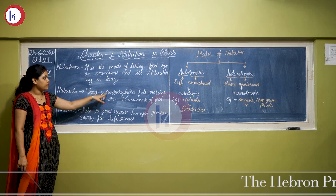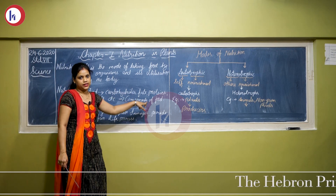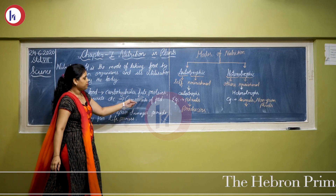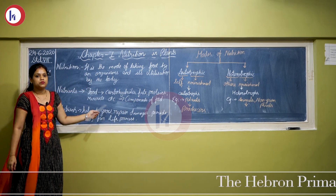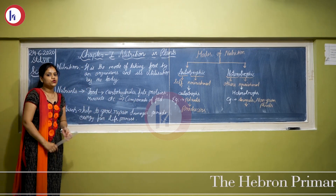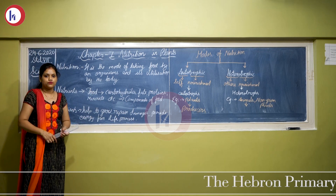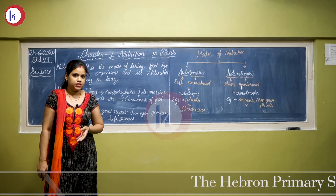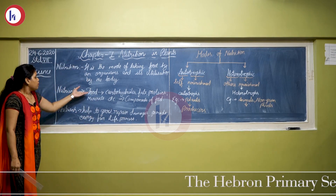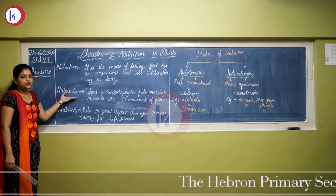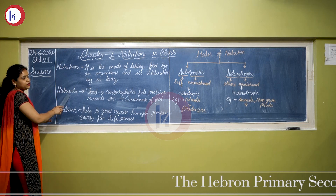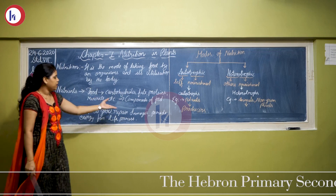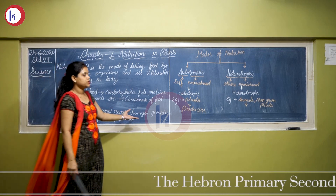Now where do you get energy from? You get energy from food. Foods have components in them — carbohydrates, fats, proteins, vitamins, minerals, etc. Our food contains all these components which are necessary to carry out our daily activities. All these components are called nutrients. So nutrition is connected with the word nutrients. Nutrients help to grow, repair damages, and provide energy for life processes.